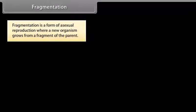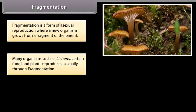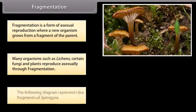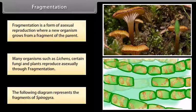Fragmentation is a form of asexual reproduction where a new organism grows from a fragment of the parent. Many organisms such as lichens, certain fungi and plants reproduce asexually through fragmentation. The following diagram represents the fragments of Spirogyra.